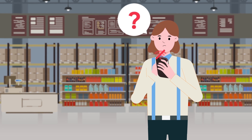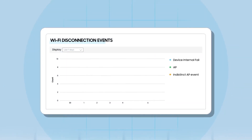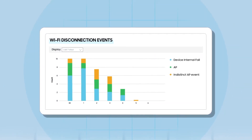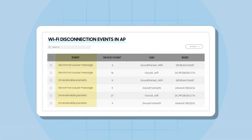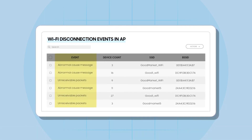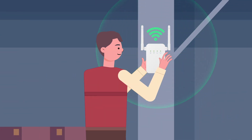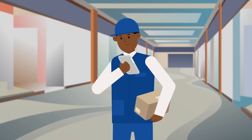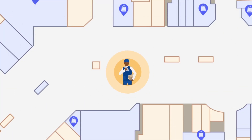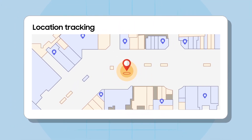If abnormal Wi-Fi disconnections occur, IT administrators can check the cause via Knox Asset Intelligence and take proper action. They can also check the locations of devices through the Knox Asset Intelligence console if necessary.